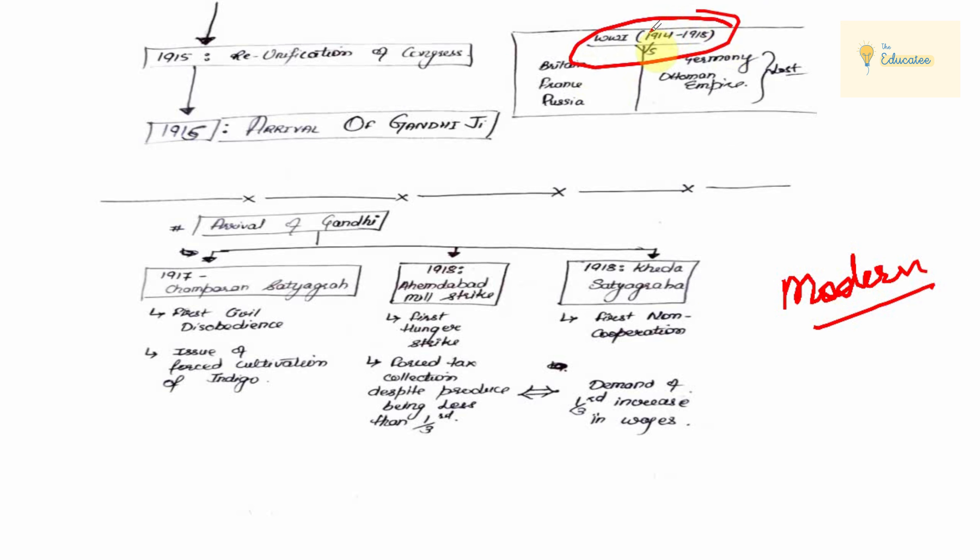You know the basic information about World War I, which is between Britain, France and Russia. And the other side was Germany and Ottoman Empire. Germany and Ottoman Empire were defeated.